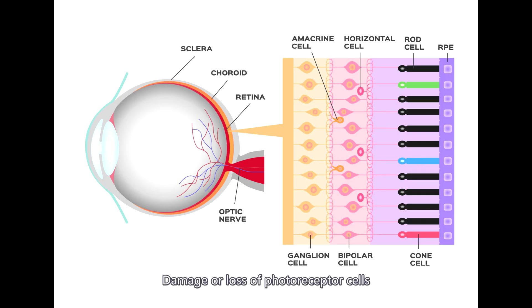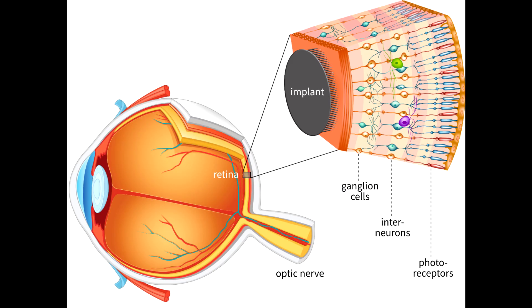Damage or loss of photoreceptor cells causes vision loss. A retinal prosthesis acts as an artificial retina. It works to replace the function of photoreceptors that have been lost during retinal degeneration.